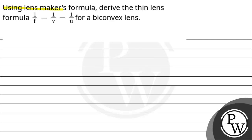Hello, let us read this question. Using lens maker formula, derive the thin lens formula: 1/f = 1/v - 1/u for a biconvex lens.